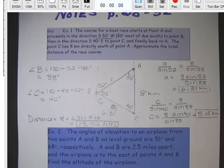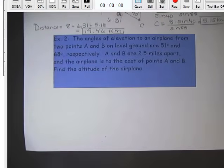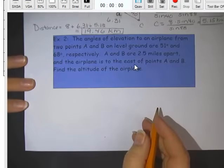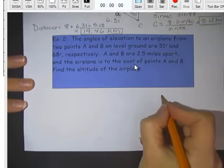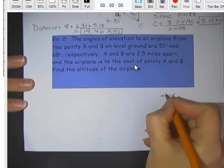Okay, second example here. Angle of elevation to an airplane from two points A and B on level ground. Okay, the first time I did this, I didn't read all of it before I started drawing, and didn't notice at the end, it says the airplane is to the east of points A and B. All right, so I need my airplane to be up here to the east. Here's my airplane. Here's my airplane. Give it some wings. Of point A and B.